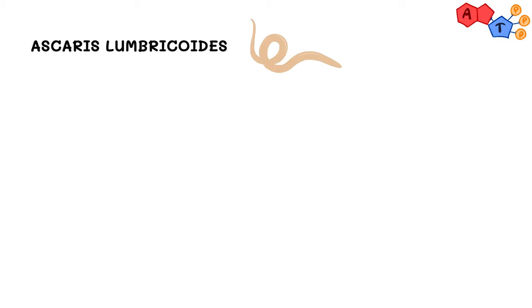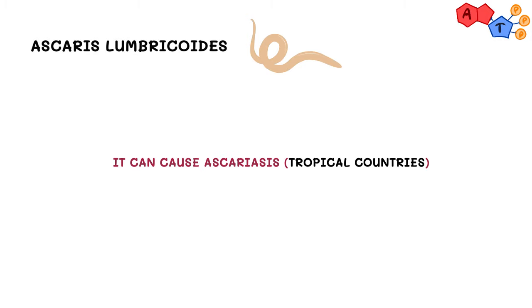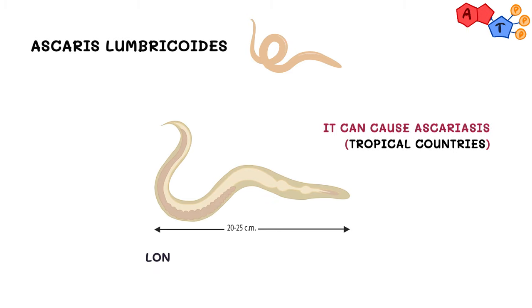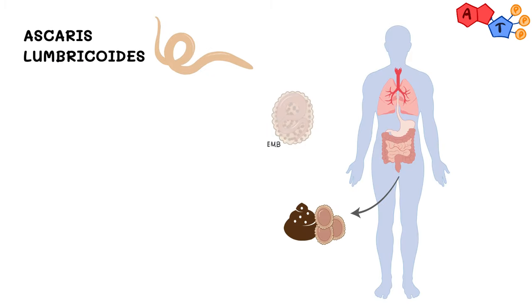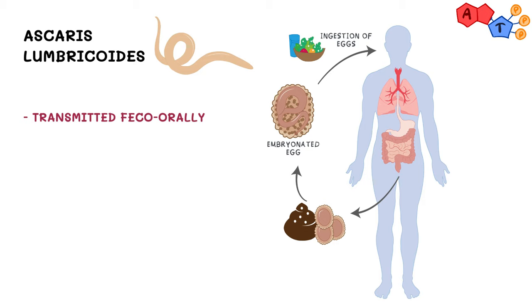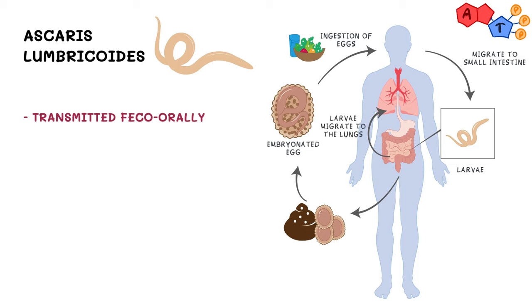The second nematode we'll discuss is Ascaris lumbricoides, commonly responsible for causing ascariasis in different countries, especially tropical ones. Ascaris lumbricoides is the longest intestinal nematode — hence its other name, the giant roundworm. Keep its size in mind, because it will make perfect sense when we discuss its clinical importance. It is also transmitted fecal-orally; after ingestion, eggs go to the intestine, and then larvae ascend to reach the lungs where they mature, before going back to the small intestine.